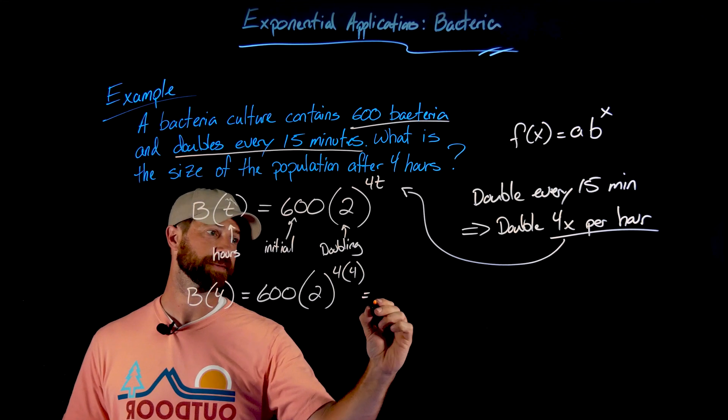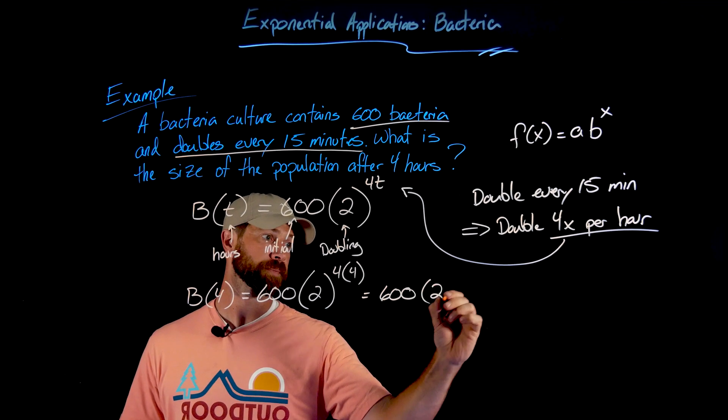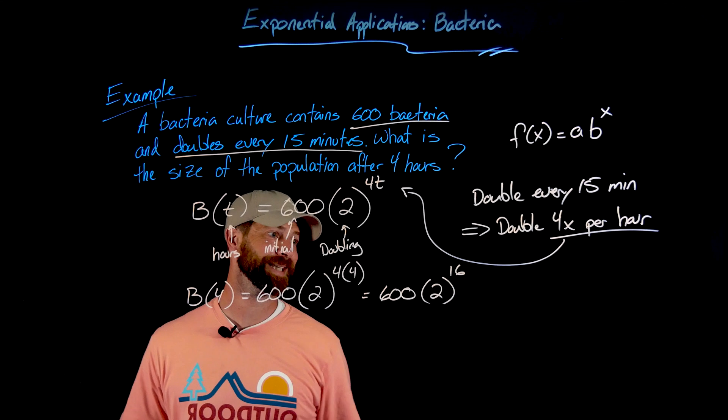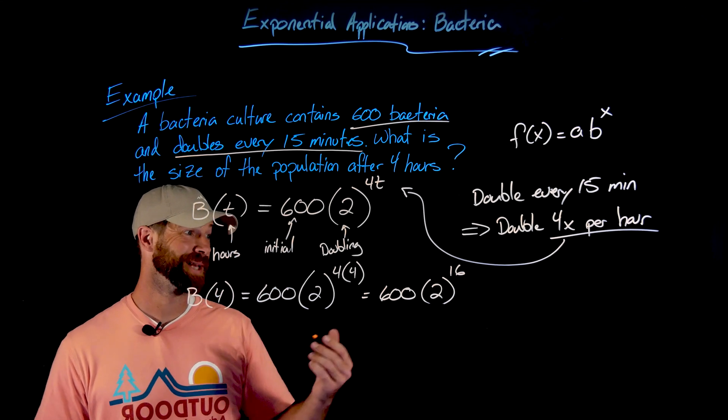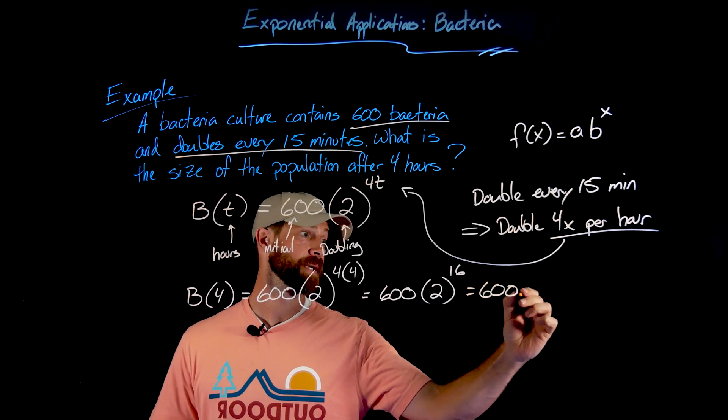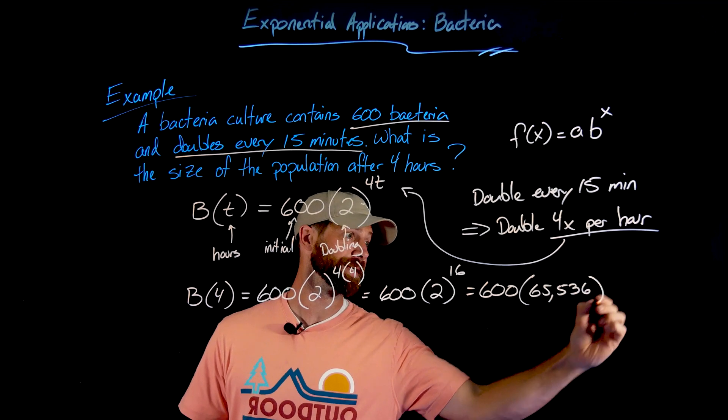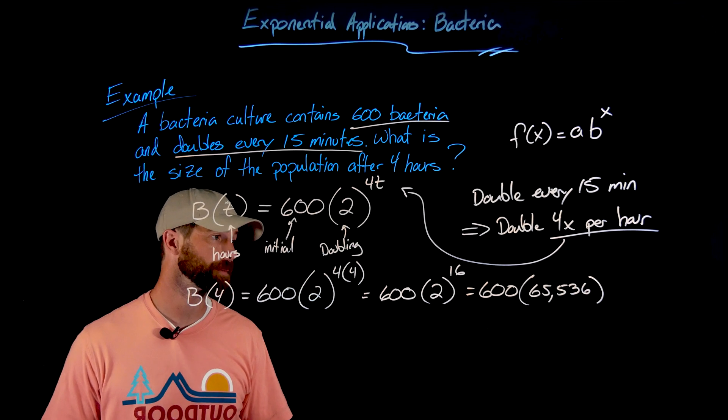...which gives us 600 times 2 now raised to the 16th power. And then applying the exponent of 16 to the factor of 2 gives us 600 times 65,536.